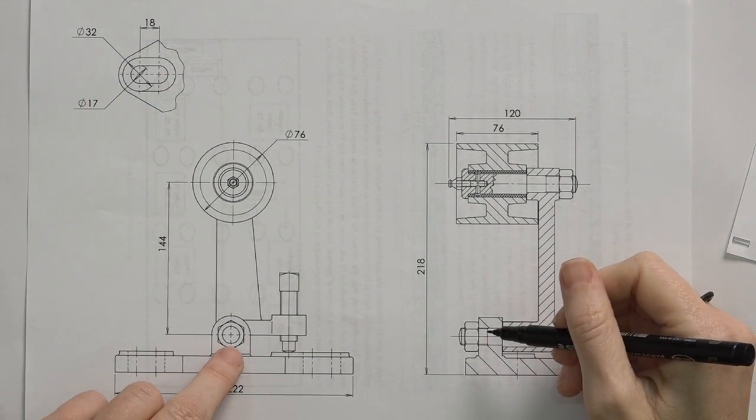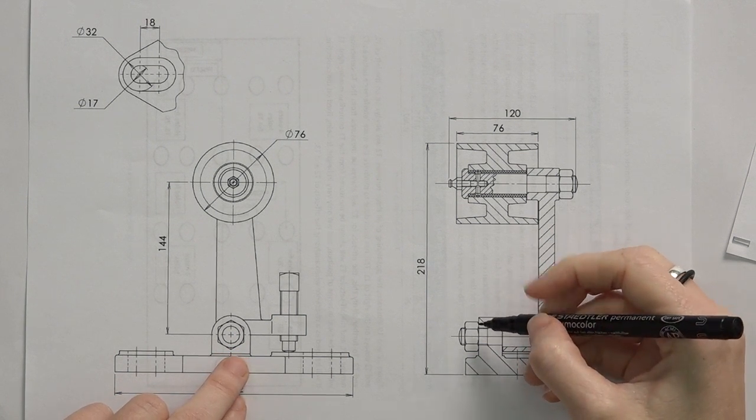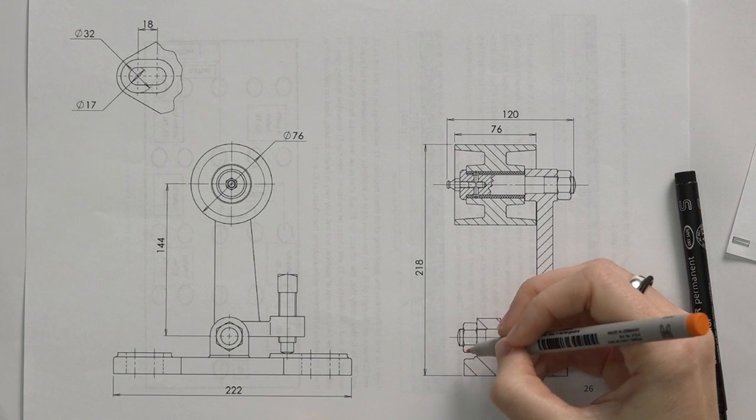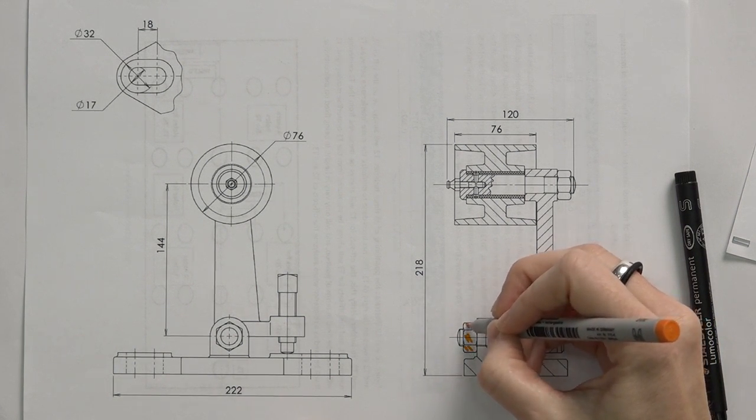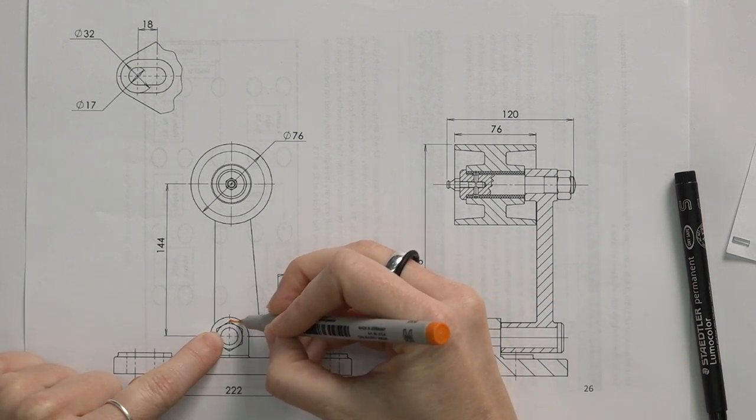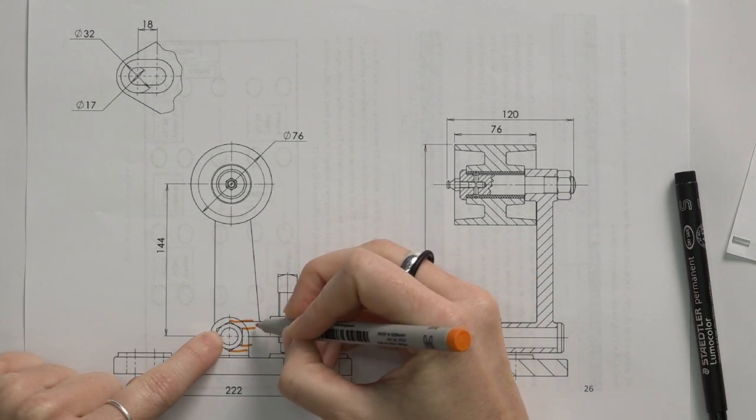Another important thing to remember here, to not make a mistake on, is the orientation of the nut. Can you see when I look at this here, I see three sides of the nut, which means if I'm looking at it in the opposite view, I have to see the three sides of the nut.